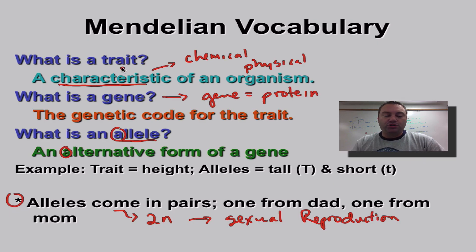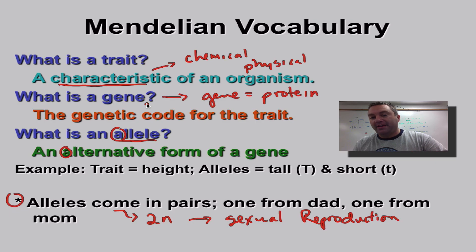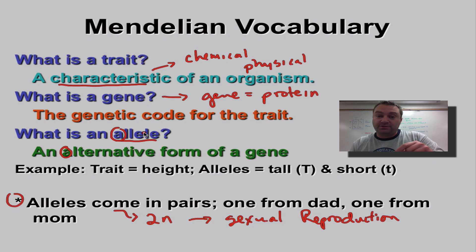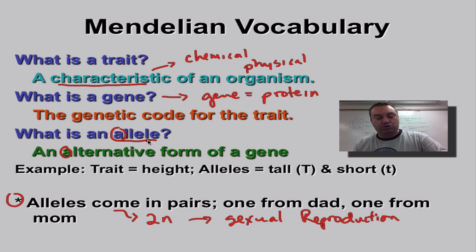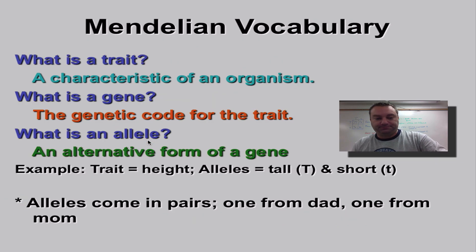To recap: a trait is a characteristic. A gene codes for that trait. Genes can come in different forms for a particular trait. Those different forms of a gene are called alleles — for example, a tall allele and a short allele.